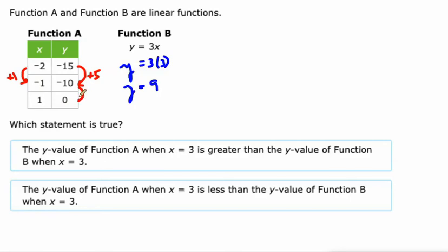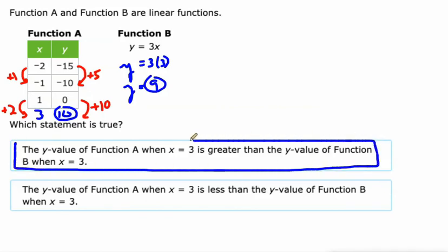So if we go up from 1 to 3, that would be an increase of 2, right? That would get us to 3. So with our Y values, we need to go up, instead of 5, we'd have to go up 10. So that would be from 0 to 10, which is 10. And 10 compared to 9, function A has a bigger value at X equals 3 than B does.